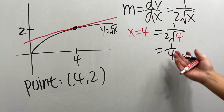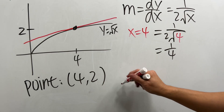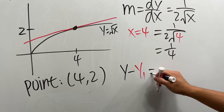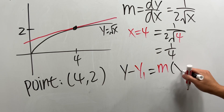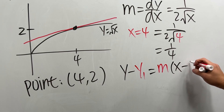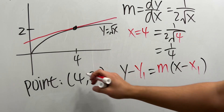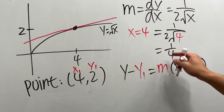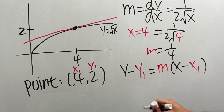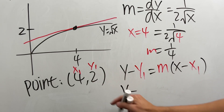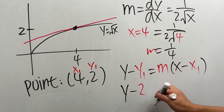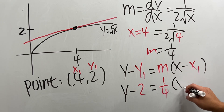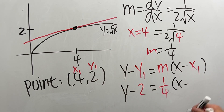Now we have the slope, we have the point. We can use y minus y₁ equals m times x minus x₁. Here is x₁, here is y₁, and here is m. Plugging in: y minus y₁ equals m times x minus x₁.